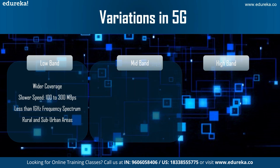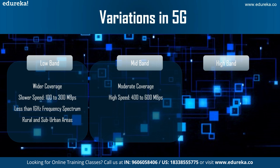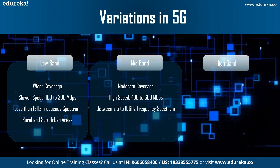Then comes the mid band. As expected, this gives moderate coverage. Mid band frequency offers high speed of around 400 to 600 Mbps. The frequency spectrum for this lies between 2.5 to 10 GHz. Mid bands carry the majority of traffic, being situated in suburban and urban areas.